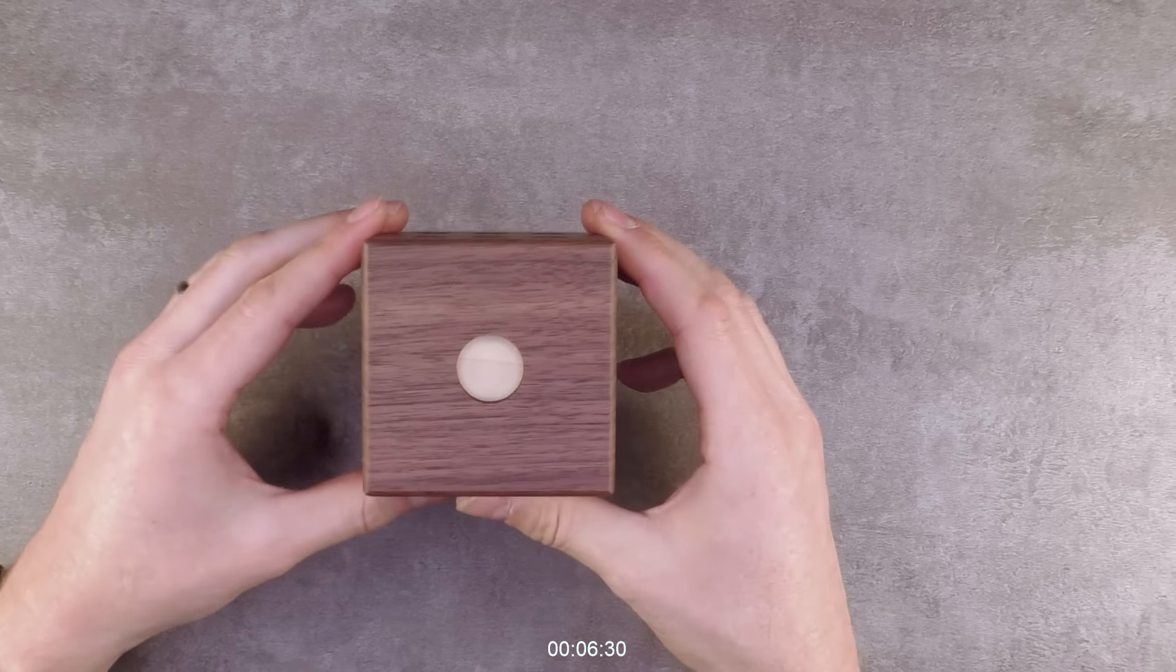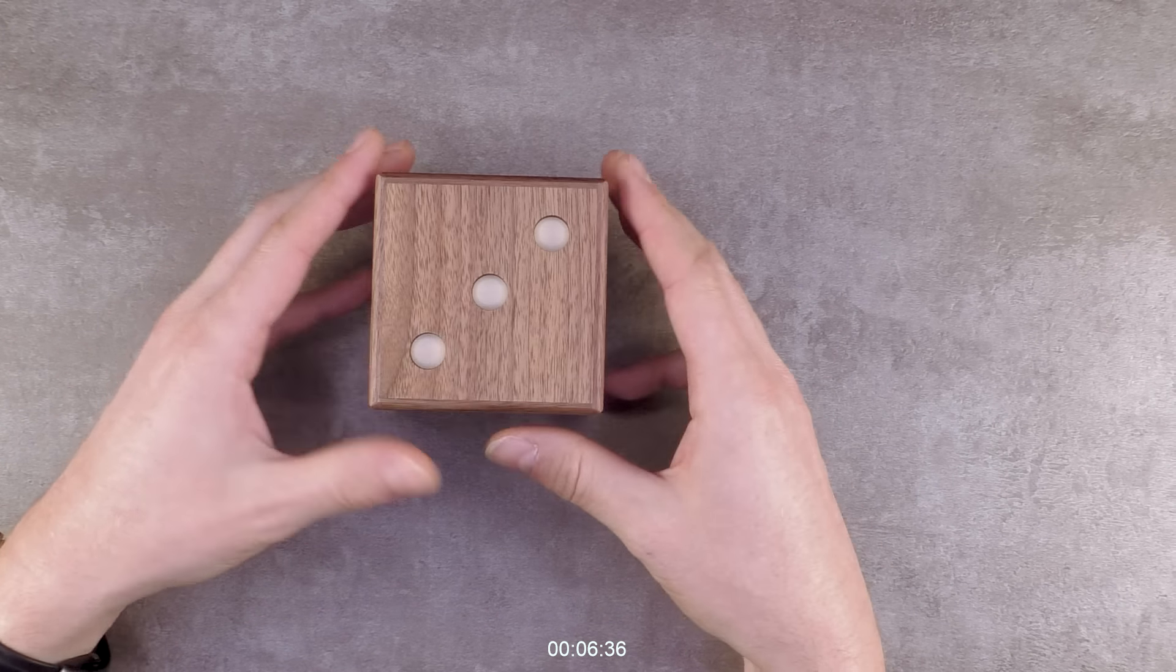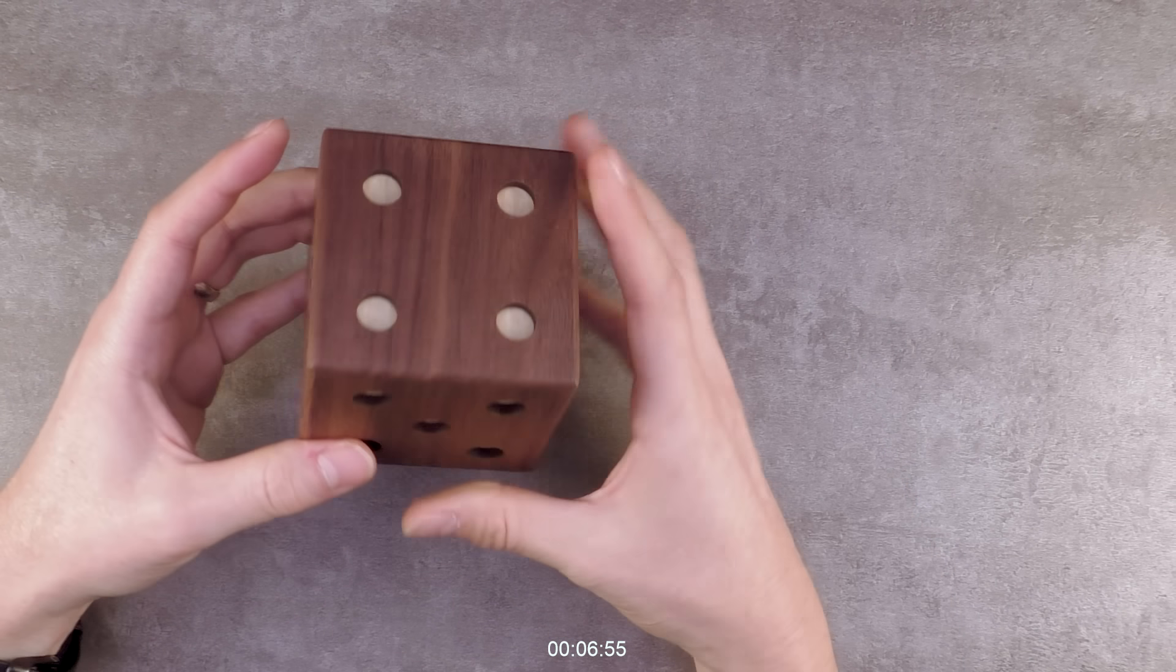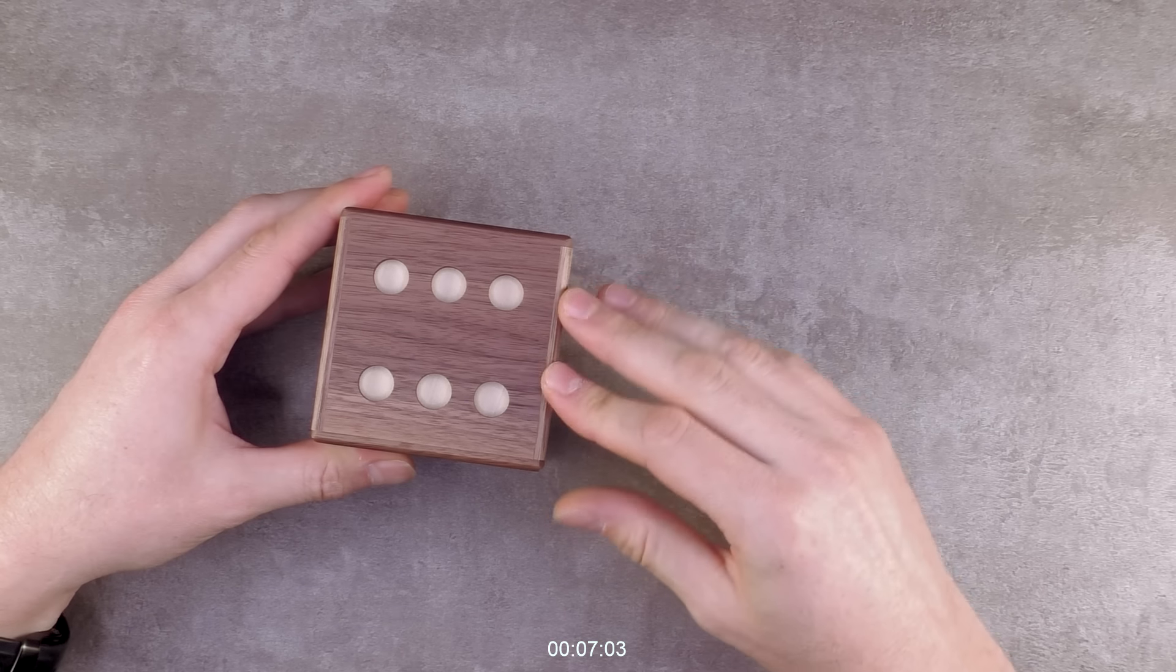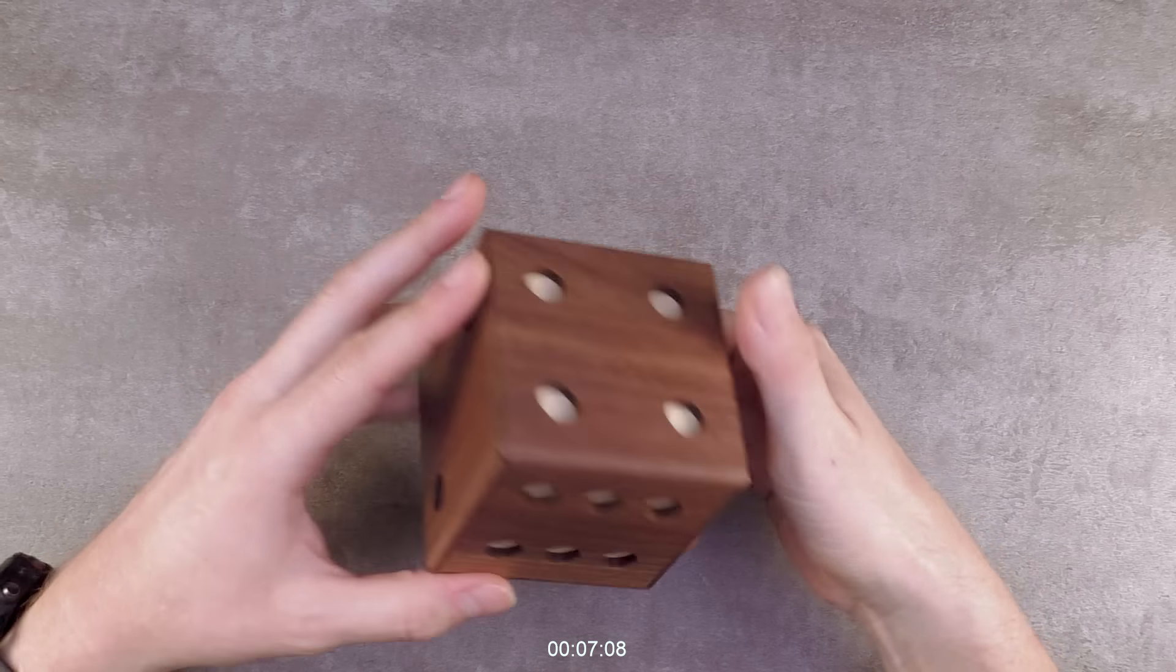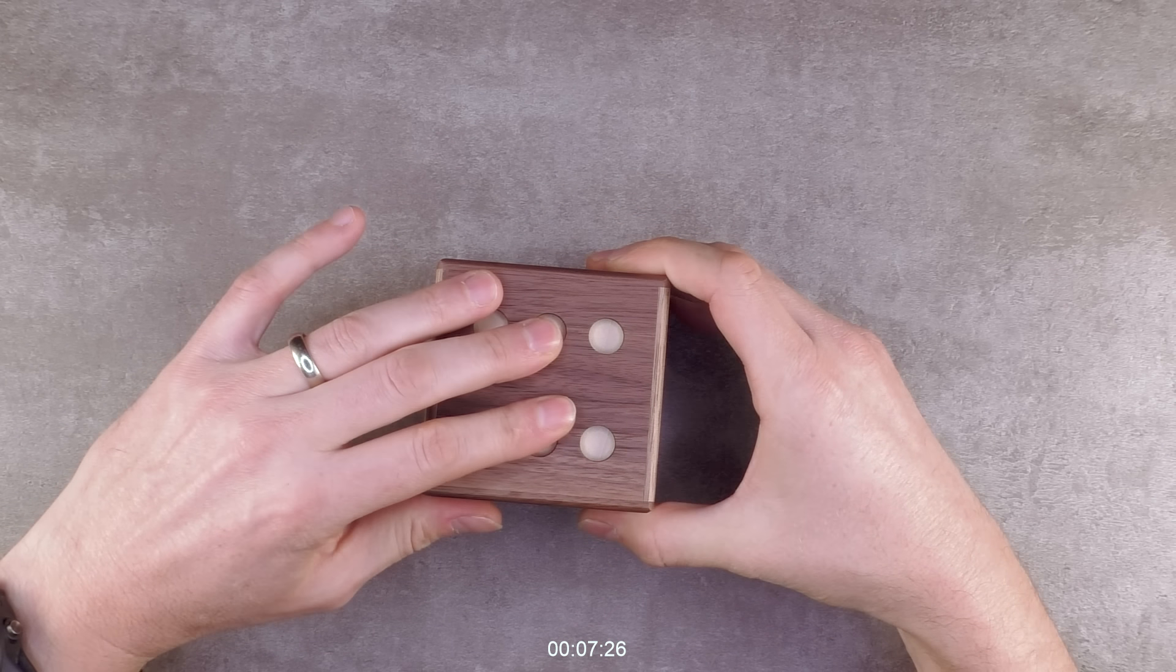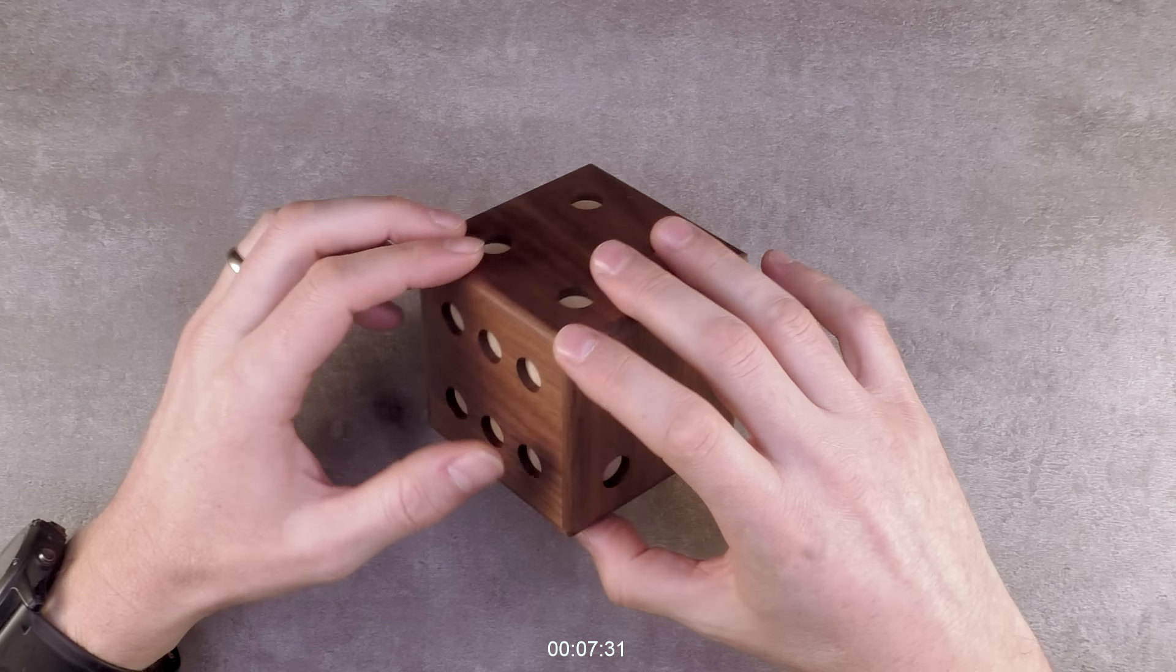Again, number one, number two, number three, where's the number six, number four, number five, number six, oh, it does not work. Maybe other way around, maybe they need to be on the bottom side, like number one, number two, number five, and number six, no, also doesn't work. Where do I know where to start?